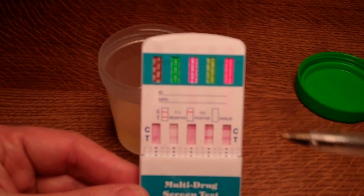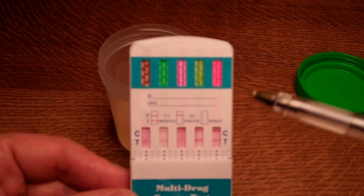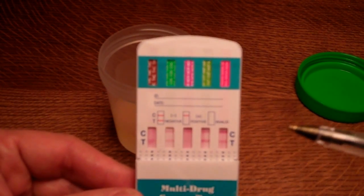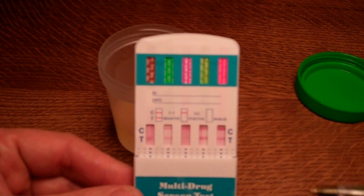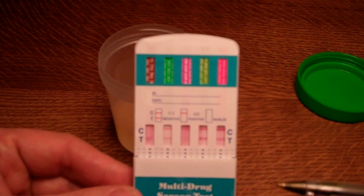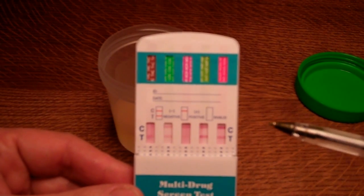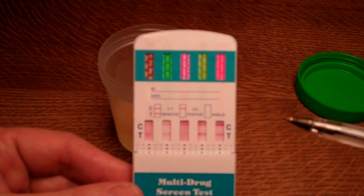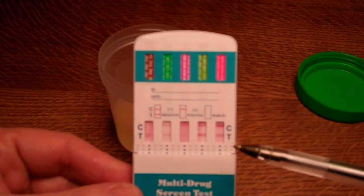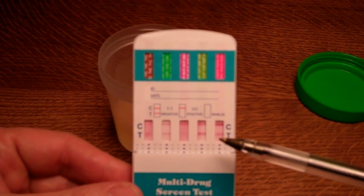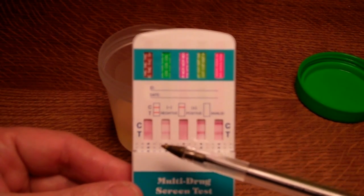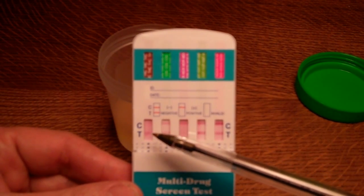What you're looking for is the presence of a test line forming in the presence of a control line. For a test to be interpretable, you must always have a control line developing, and what you're looking for is the presence or absence of a test line. A test line present indicates a negative result—there's no drug in the system or urine sample at above the cutoffs for the test in that case.